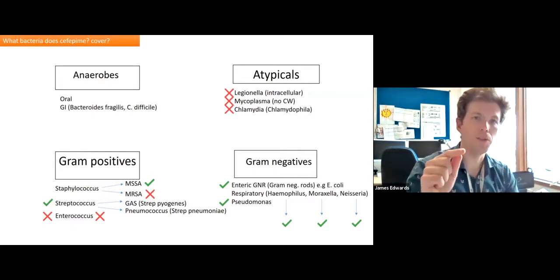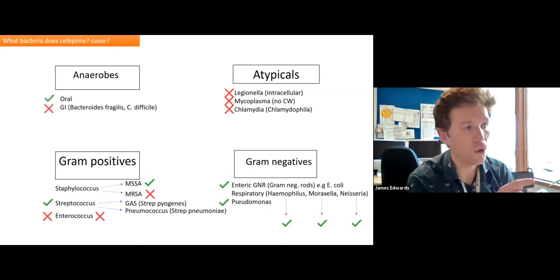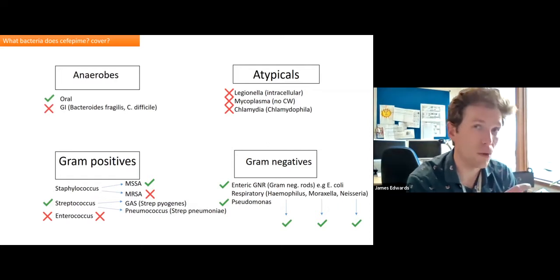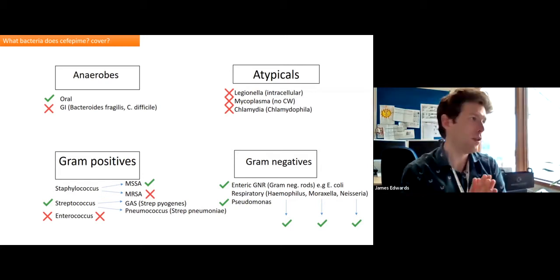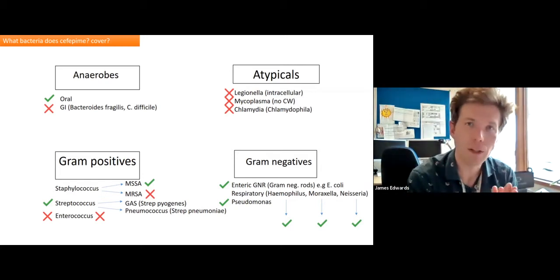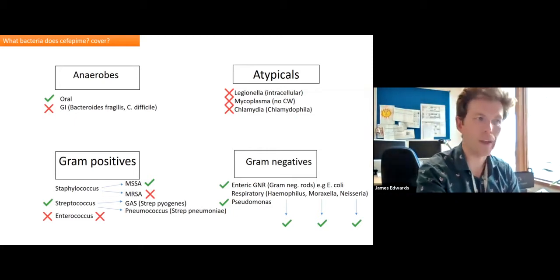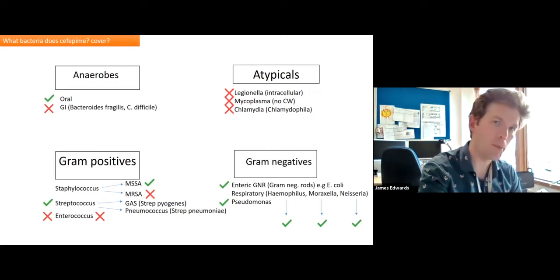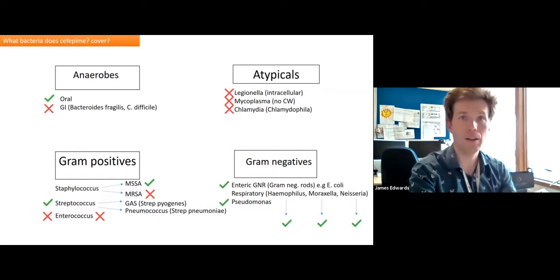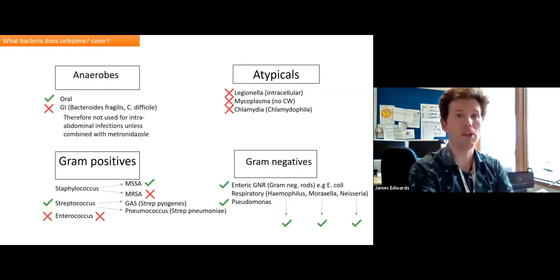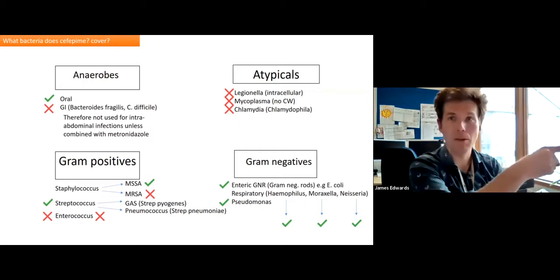And another difference where we see a difference with cefepime and Piptaz is with the anaerobes. It's useful for oral anaerobes, but it's not useful for GI tract anaerobes. What that means is that if you had someone with an intra-abdominal infection, bacteria in that region, what do we need to cover? Well, yes, we've got the enteric gram negatives covered, but we would probably need to be thinking about GI anaerobes. And so that's why you often see cefepime used in combination with metronidazole, because the metronidazole plugs the gap that cefepime misses.